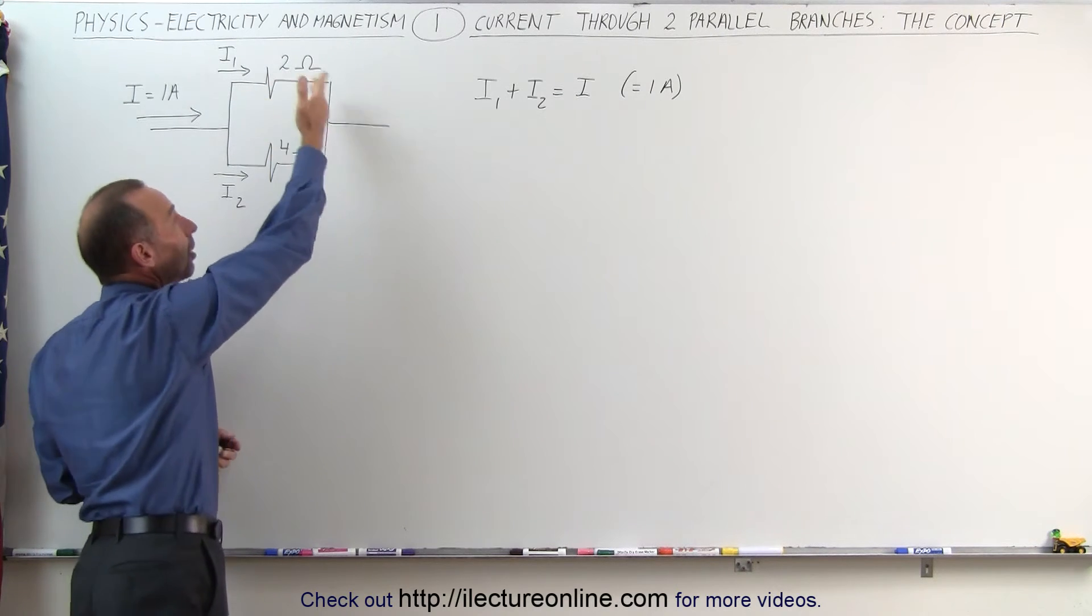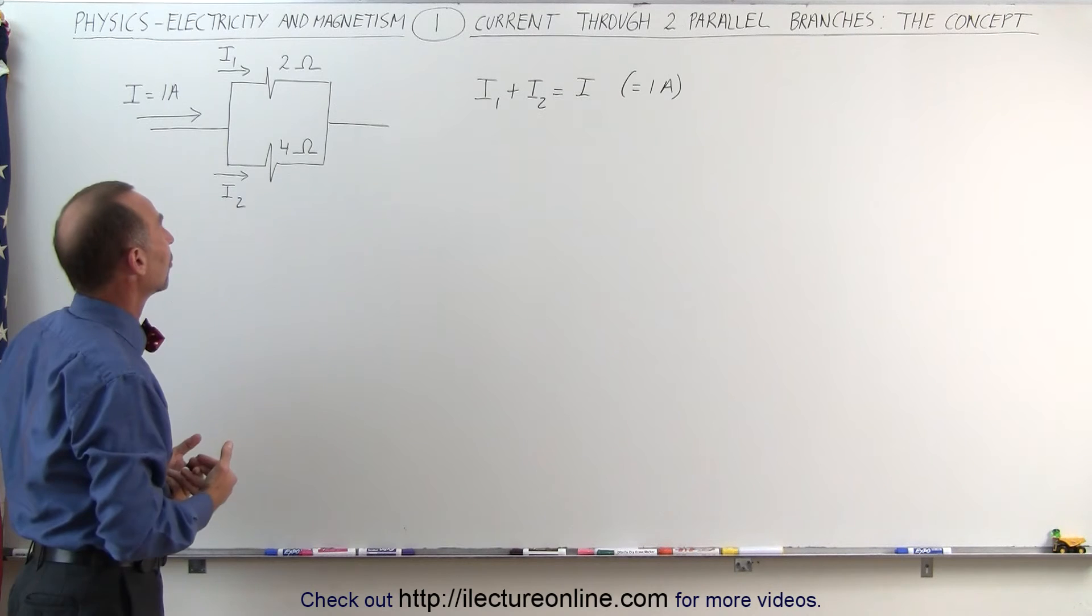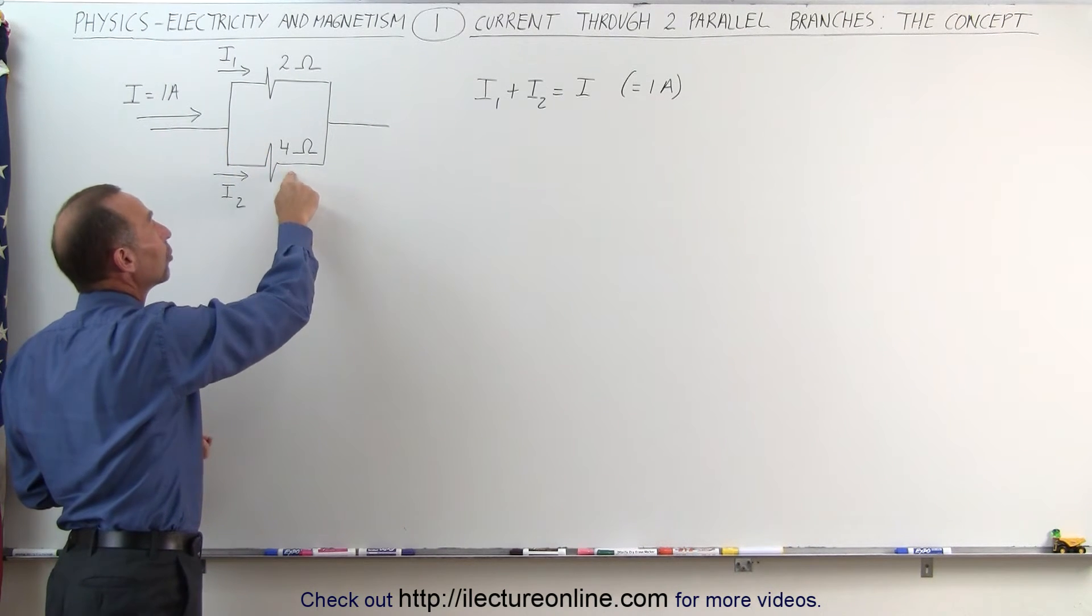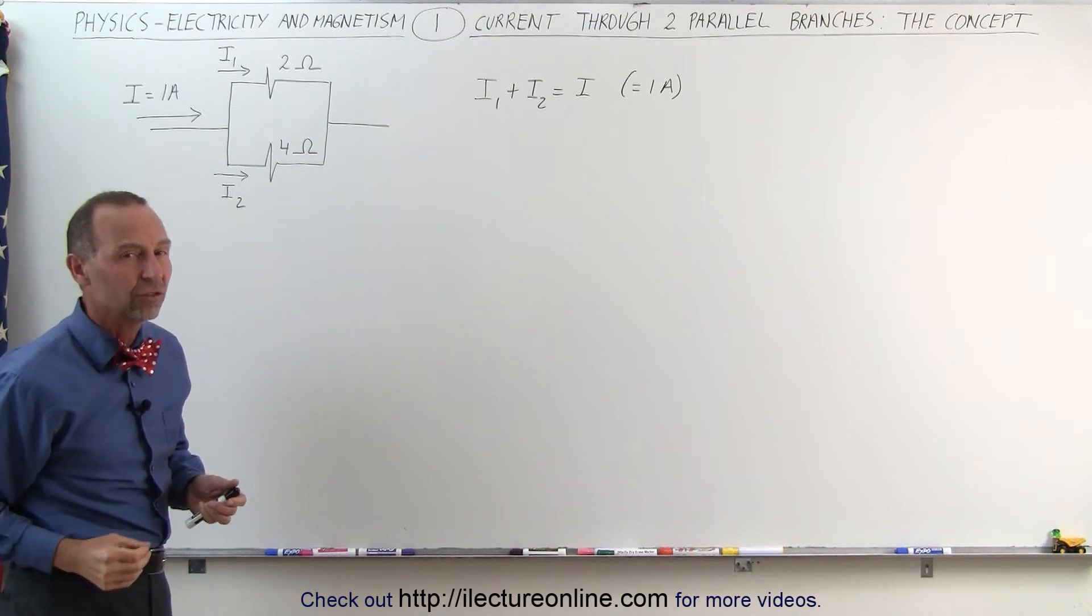It will be inversely proportional to the ratios of the resistance. Also, in other words, the amount of current to the bottom branch will be half the current to the top branch because it has twice the resistance.